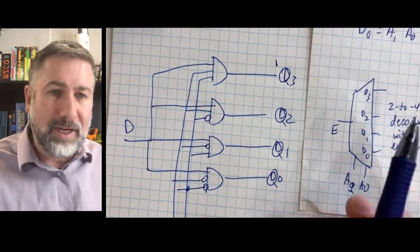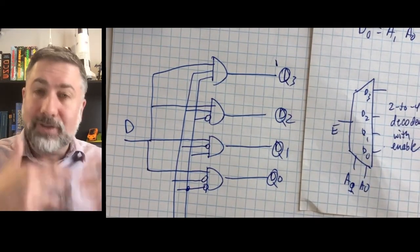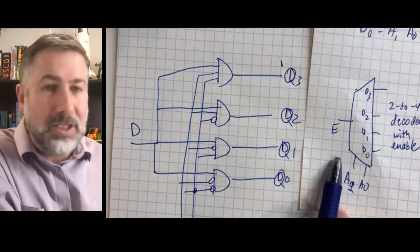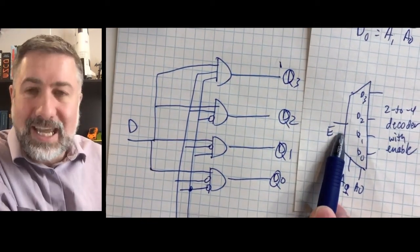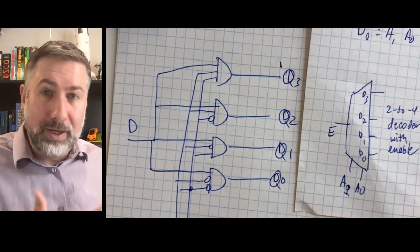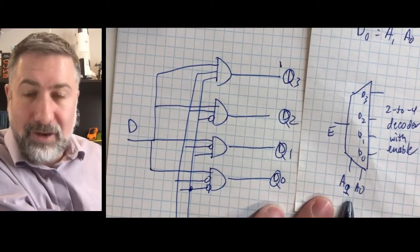They're the same device because we have a single line that is being shunted out to one of a set of possible outputs. In the case of the decoder, the single line is the enable. If the enable is 0, all the outputs are 0. If the enable is 1, the output is whichever min term is selected by the address.